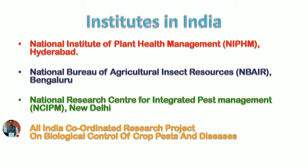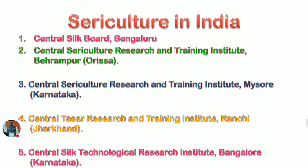The All India Coordinated Research Project on Biological Control of Crop Pests is a national institute dealing with biocontrol agencies. Institutes related to sericulture in India include: the Central Silk Board, Bengaluru; the Central Sericultural Research and Training Institute, Berhampore, Orissa; the Central Sericultural Research and Training Institute, Mysuru, Karnataka; the Central Tasar Research and Training Institute, Ranchi, Jharkhand; and the Central Silk Technological Research Institute, Bengaluru, Karnataka.